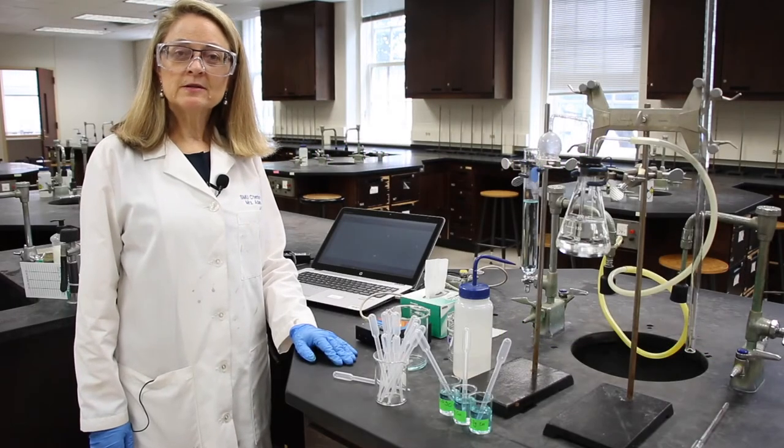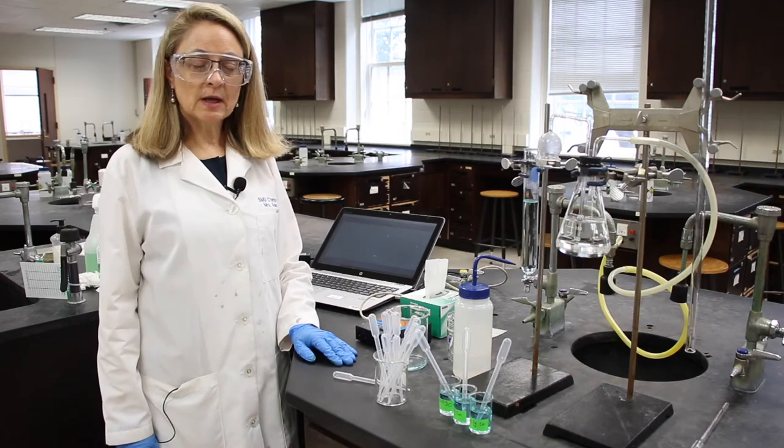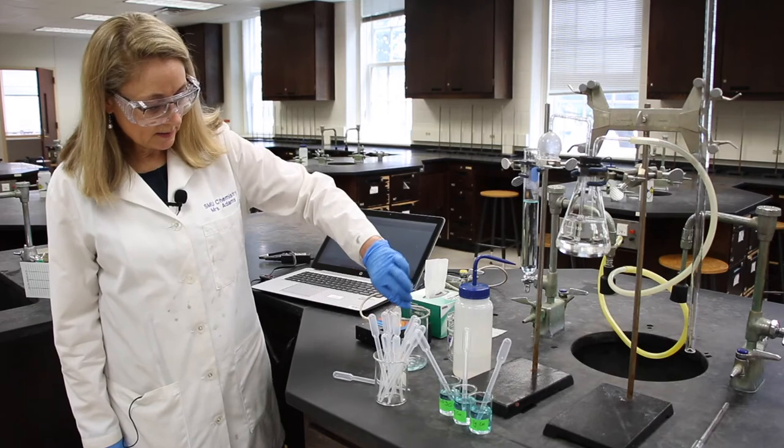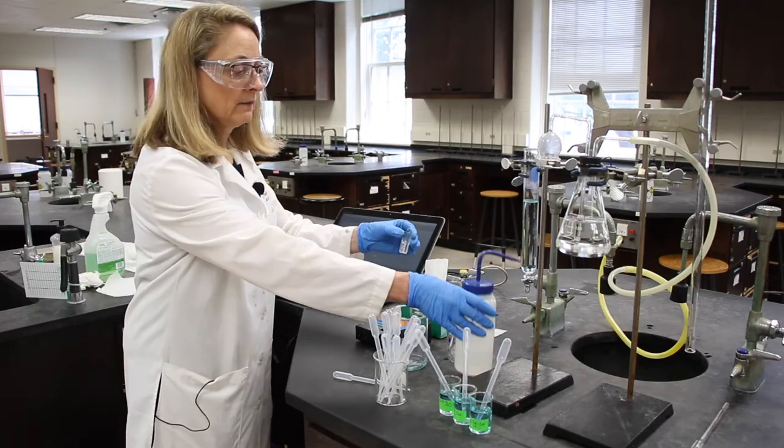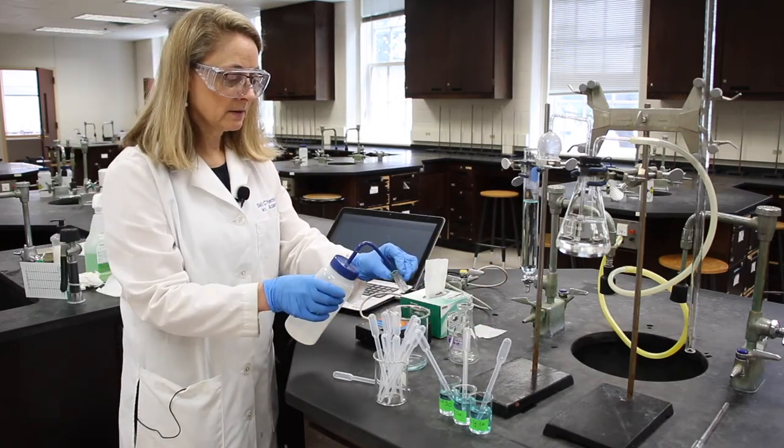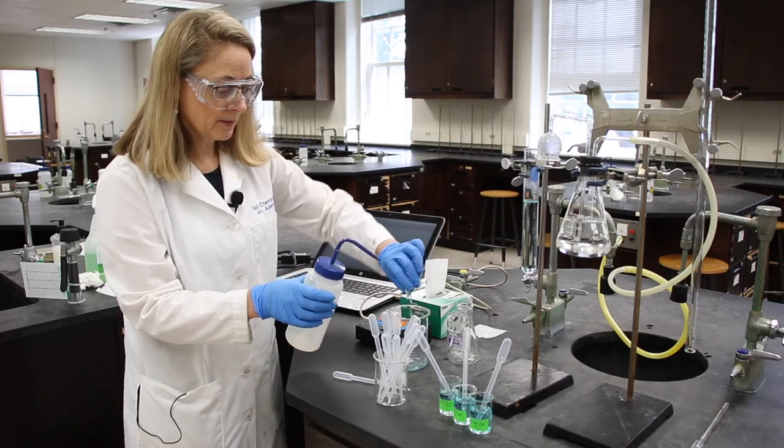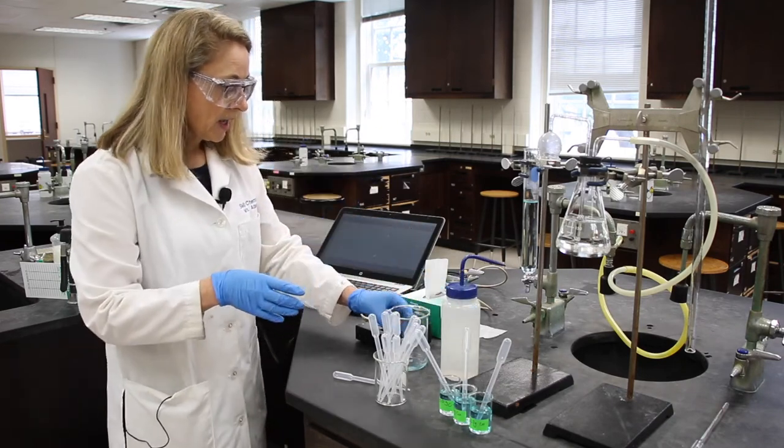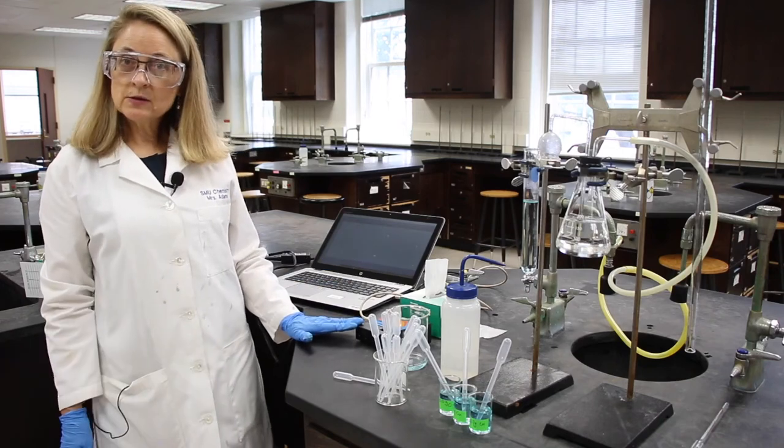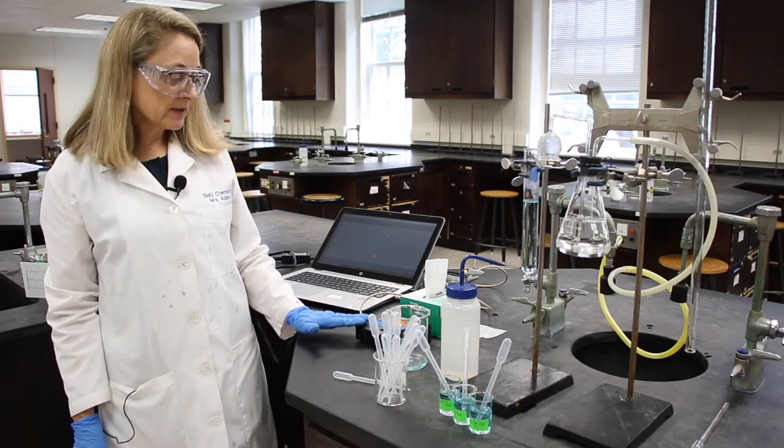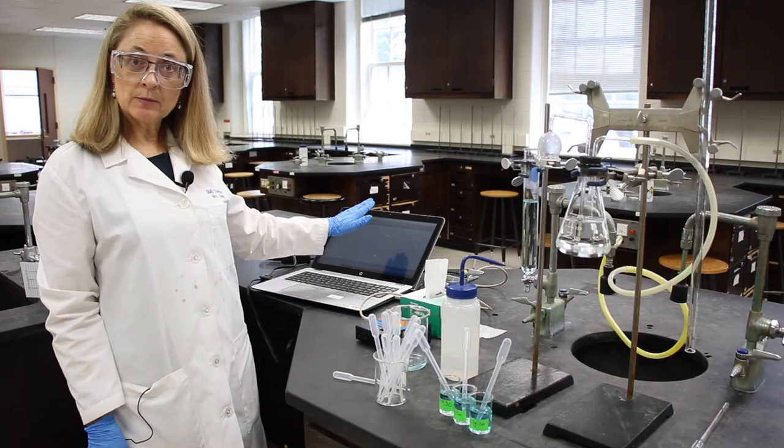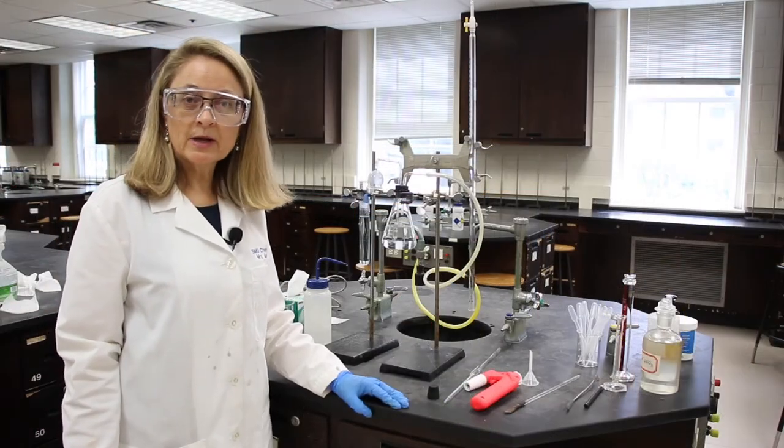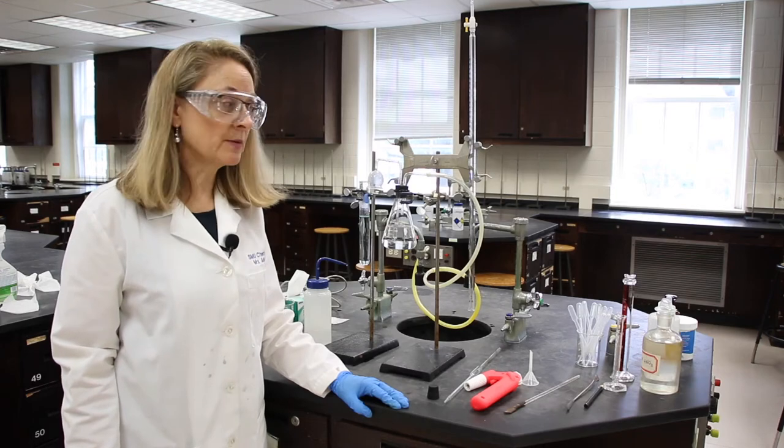Now that we've determined the absorbance of our unknown sample, we can get rid of that to waste. And give the cuvette a little rinse for the next people. And then shut the strobe, or the light, off to the spectrometer and shut down the computer. Now that we've finished our copper determination, let's move on to our silver determination.